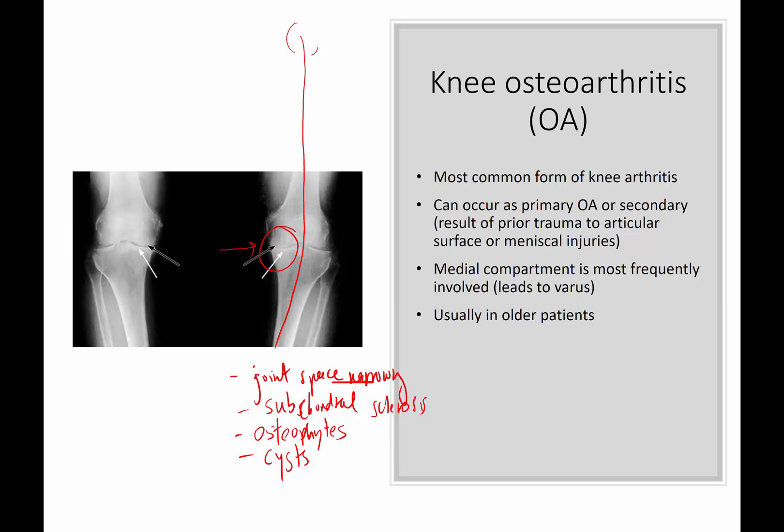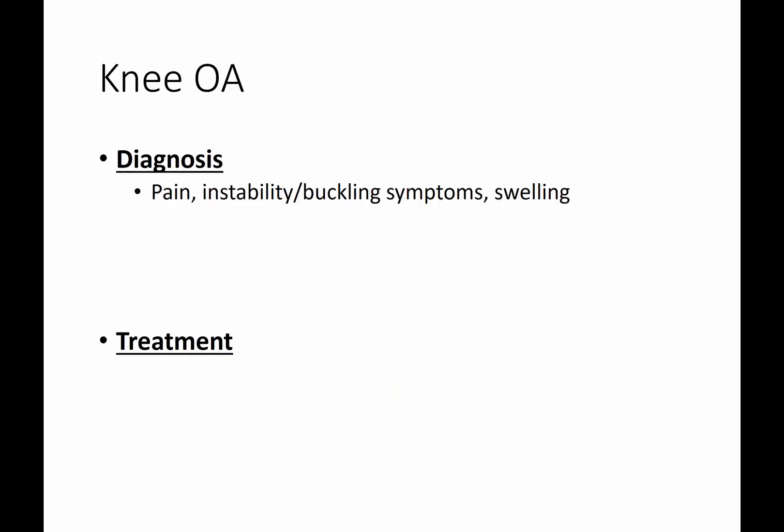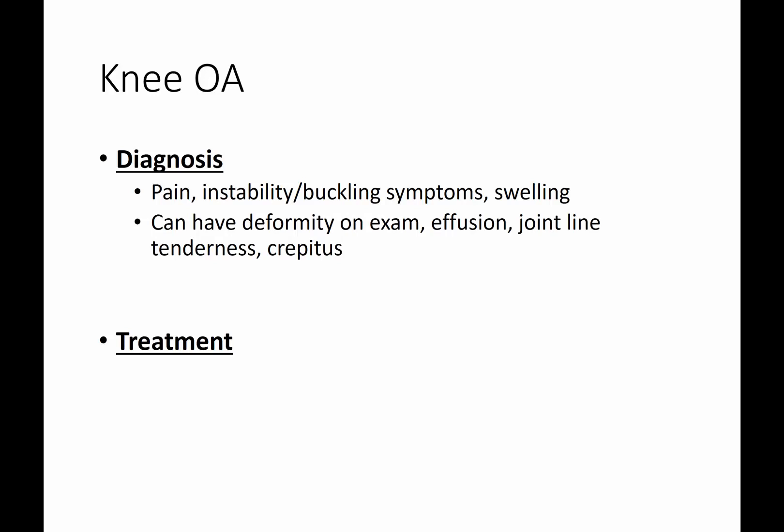For clinical diagnosis, the patient will present with pain, instability, maybe buckling symptoms, and swelling. They could have deformity on exam, an effusion or fluid inside the knee joint, and joint line tenderness. They might also have crepitus — crepitations with range of motion — because of either loose bodies or articular surfaces that are no longer congruent.